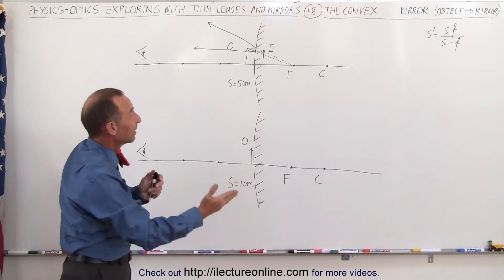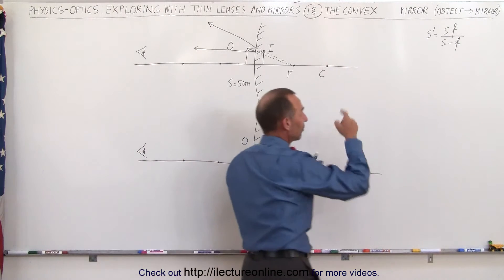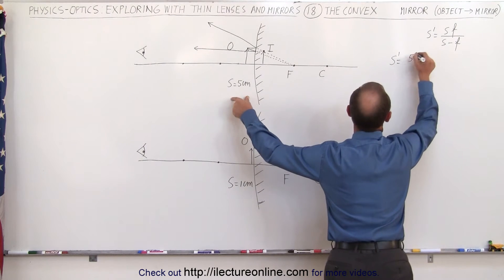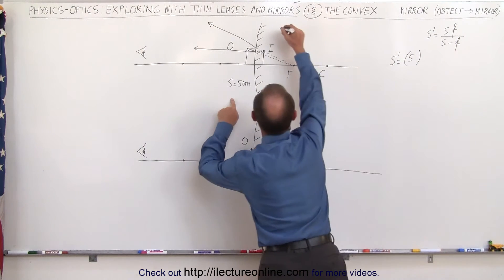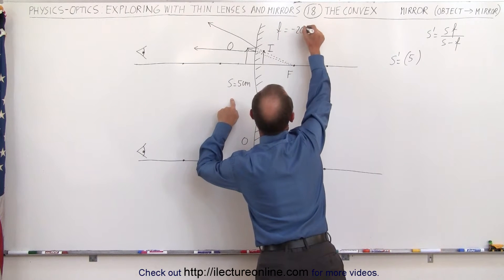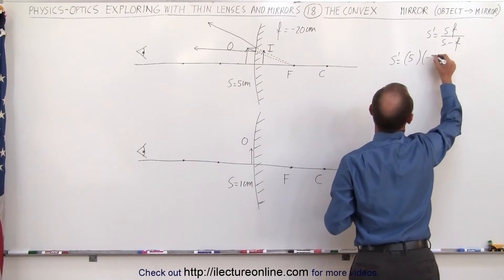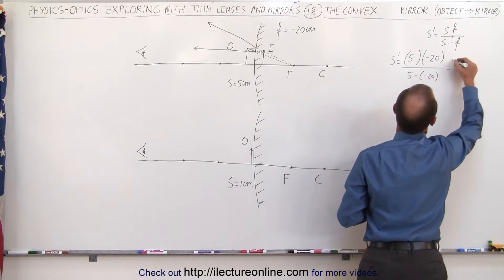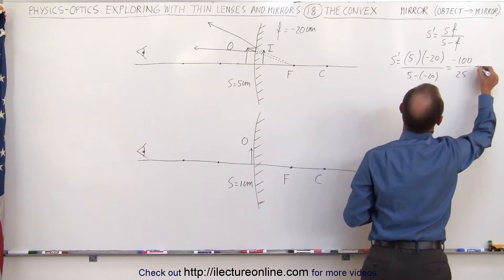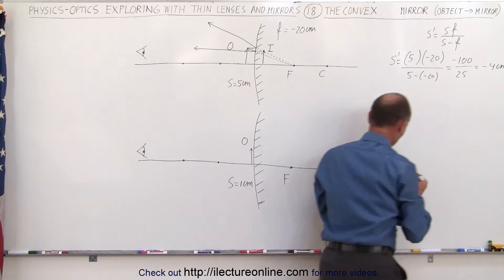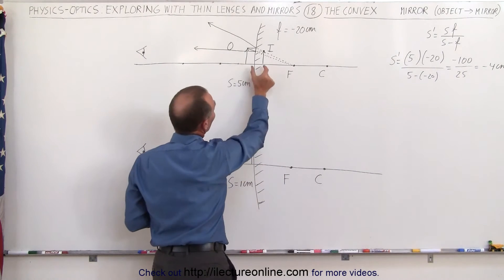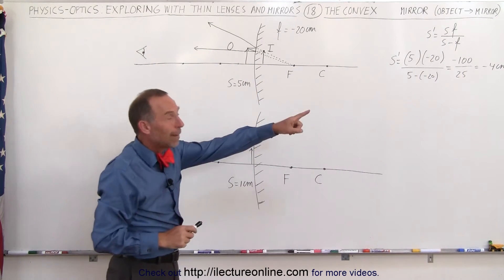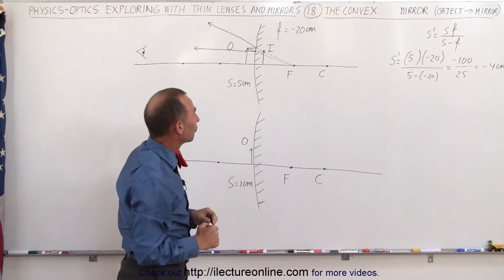The fact that the image is behind the mirror makes it a virtual image. Let's find the image distance using the equation. S prime equals S times F over S minus F, which is 5 centimeters times minus 20, divided by 5 minus minus 20. The focal length is equal to minus 20 centimeters. That gives us minus 100 divided by 25, or minus 4 centimeters. This means the image is 4 centimeters away from the mirror as the object is 5 centimeters in front of the mirror. The minus sign indicates it's behind the mirror, therefore a virtual image.